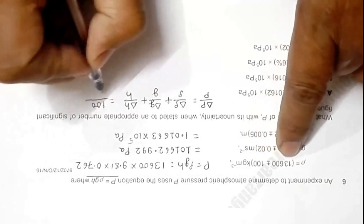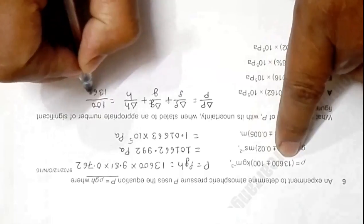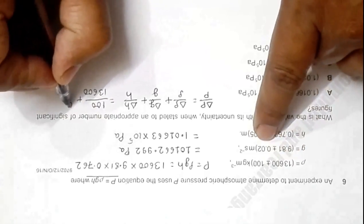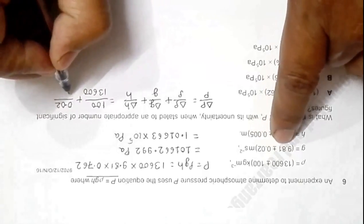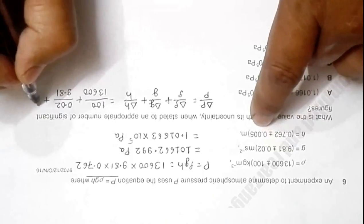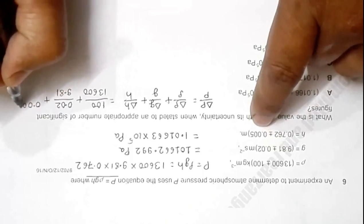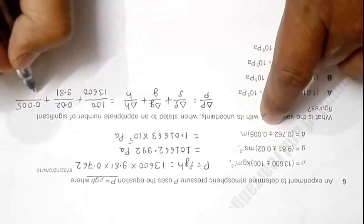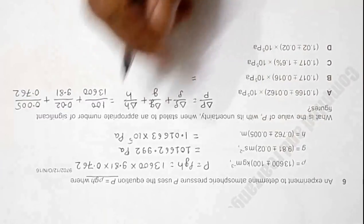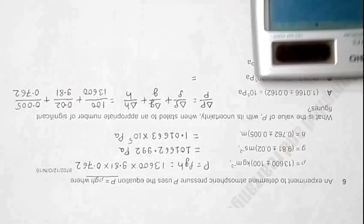It should be equal to: Δρ is 100 divided by 13,600, plus ΔG is 0.02 divided by 9.81, plus 0.005 divided by H which is 0.762. When I do the calculations, this value will come out.